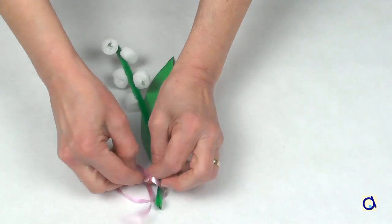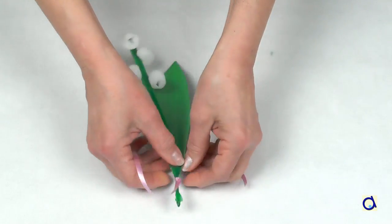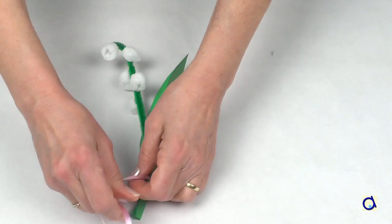Finally, put a piece of gift wrap ribbon at the base of the flower. To curl the gift wrap ribbon, simply slide the blade of a pair of scissors along the ribbon.